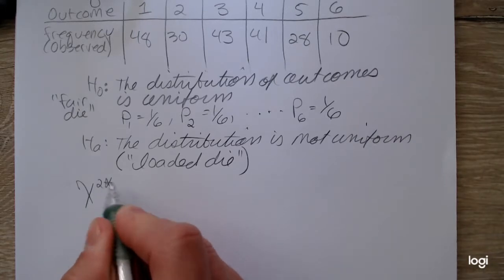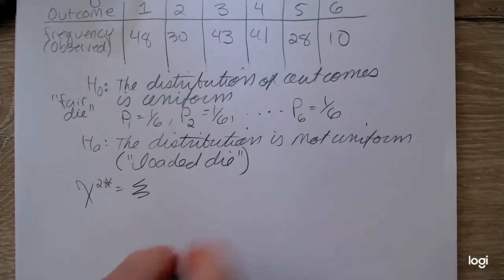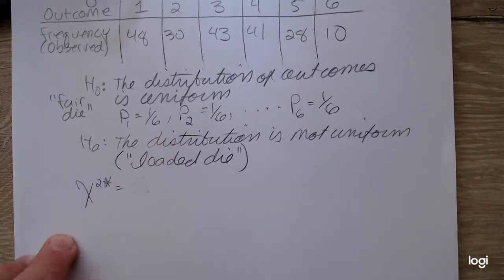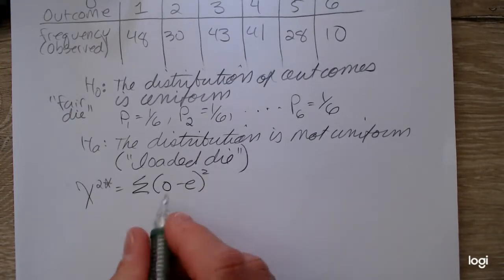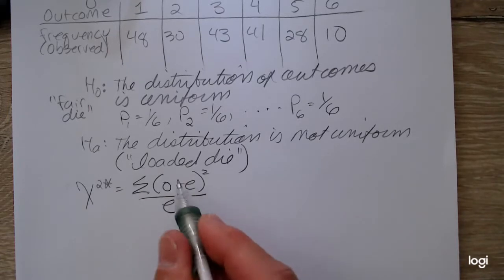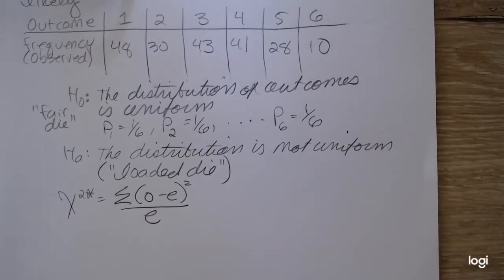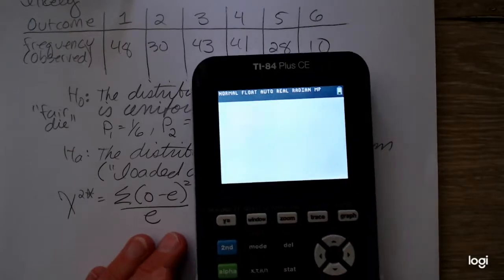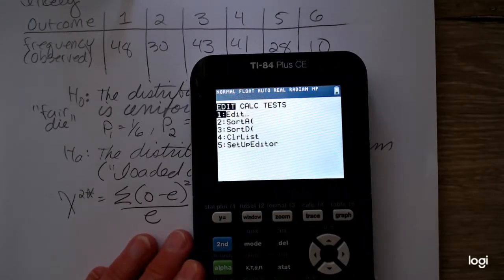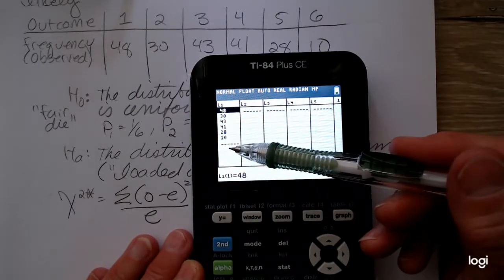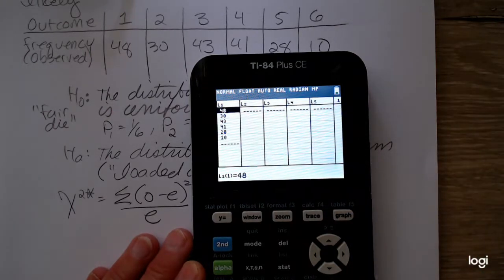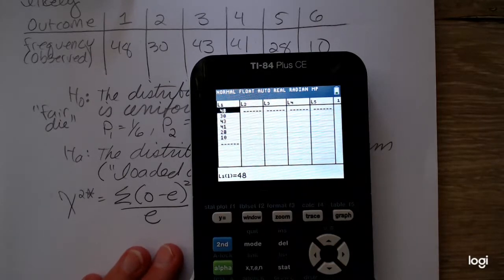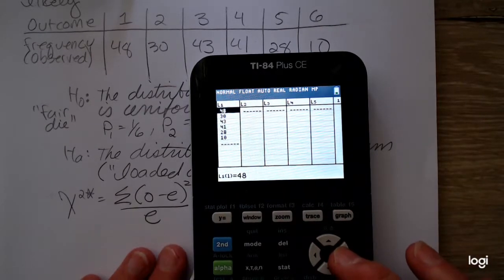The test statistic is the sum of the observed counts minus the expected counts, that difference squared over the expected, and that's done for each outcome or each category. So in my calculator, I already entered the observed counts in list 1, and I want to get the expected counts in another list so I can run the test. The calculator won't run the goodness-of-fit off of the proportions, so you have to convert those over to counts.